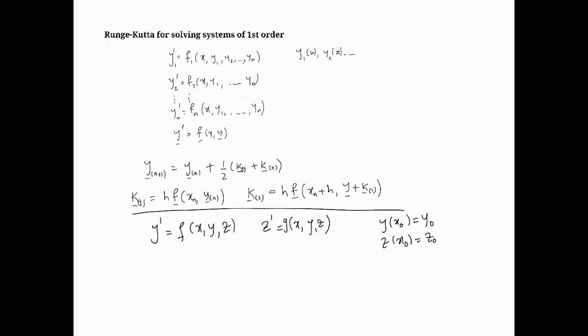The formula for these k's would work out as follows. So k1, the vector k1 would be basically h times the vector f, and it would have x_n and it would have the vector y at n.